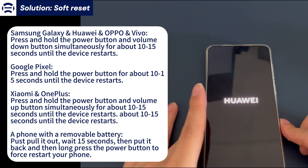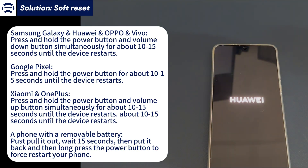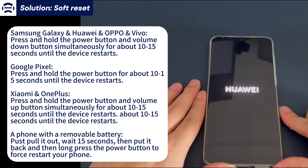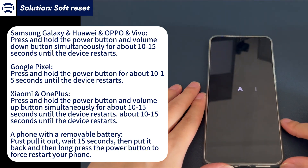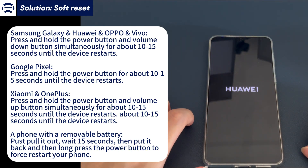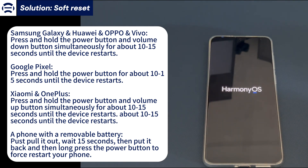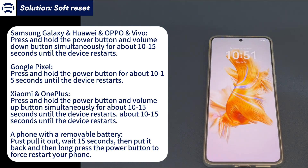To force restart a Huawei, OnePlus, or Xiaomi phone, press and hold the power button and volume up button simultaneously for about 10 to 15 seconds. When you see the brand logo, release the buttons. To force restart a phone with a removable battery, pull out the back cover, take out the battery, wait for a while, put it back, and press the power button to boot the phone. Wait a few seconds and the device will boot up correctly.